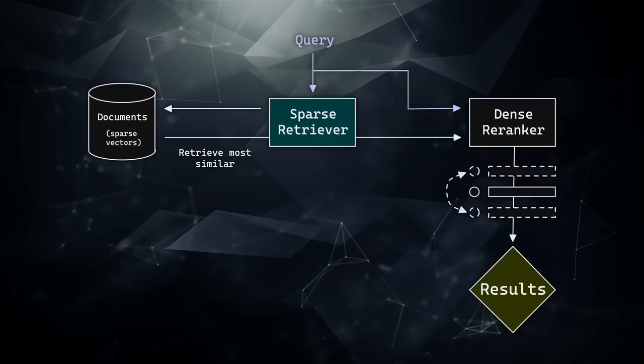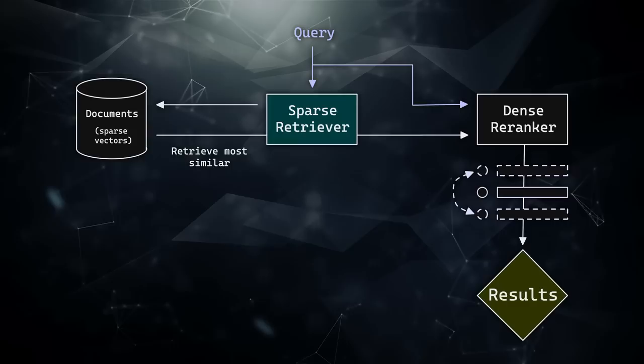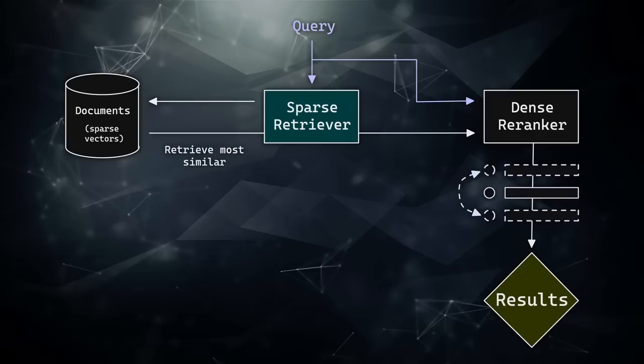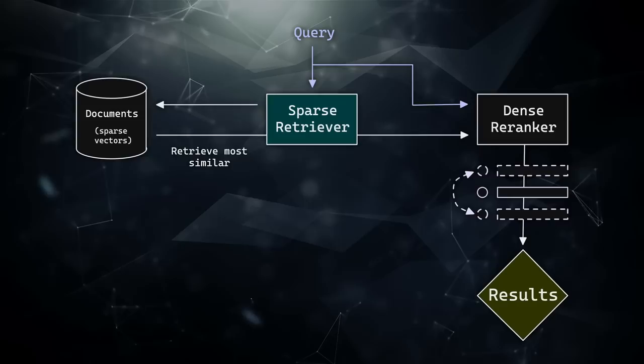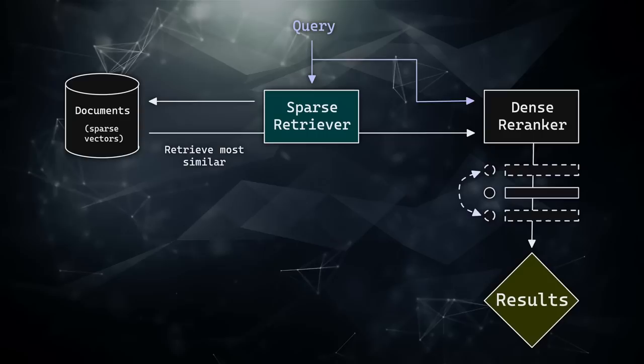Ideally we want the best of both worlds — the pros of dense and sparse without any of the cons. One band-aid solution is two-stage retrieval, where we have two stages to retrieve and rank relevant documents. In the first stage, the system uses a sparse retrieval method to search through and return relevant documents from a very large set of candidate documents.